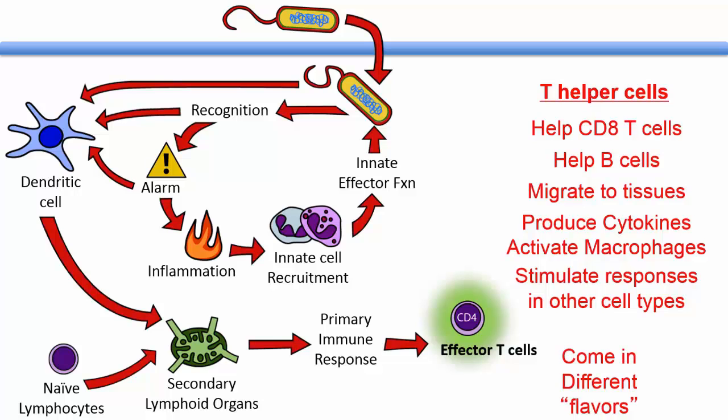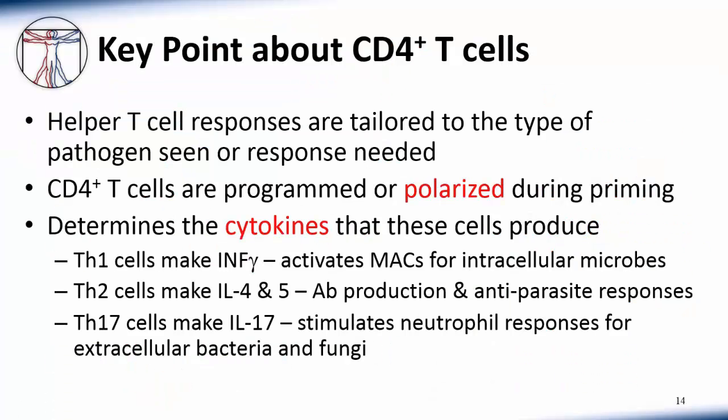To perform these various activities, T helper cells come in multiple flavors. Helper T cell responses are tailored to the type of pathogen seen or the response needed. CD4 cells are programmed or polarized during their priming, which determines which cytokines these cells produce. Th1 cells make interferon gamma, which activates macrophages for fighting intracellular microbes. Th2 cells make interleukin-4 and interleukin-5, which stimulate antibody production and antiparasite responses. Th17 cells make interleukin-17, which stimulates neutrophil responses for fighting extracellular bacteria and fungi.